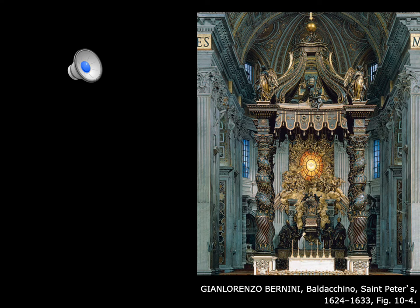The bees, vines, and sun are all symbols of Pope Urban VIII's family, along with a family crest. The baldacchino has an organic feeling — a feeling of dynamism and motion because of the twisting of the spirals and the grand scale.